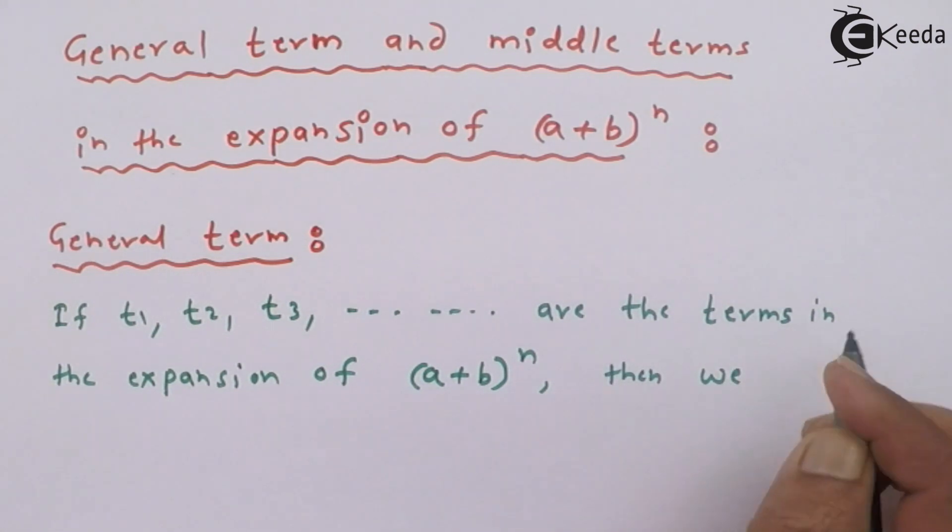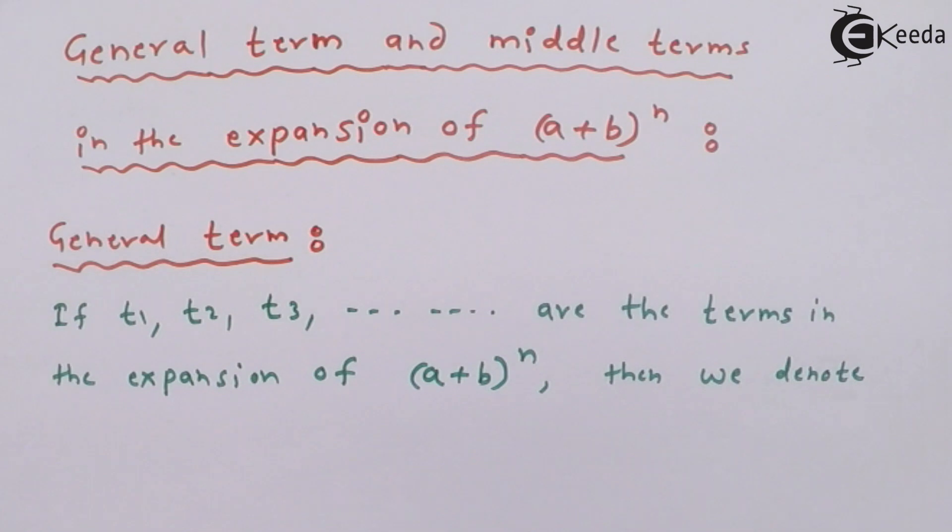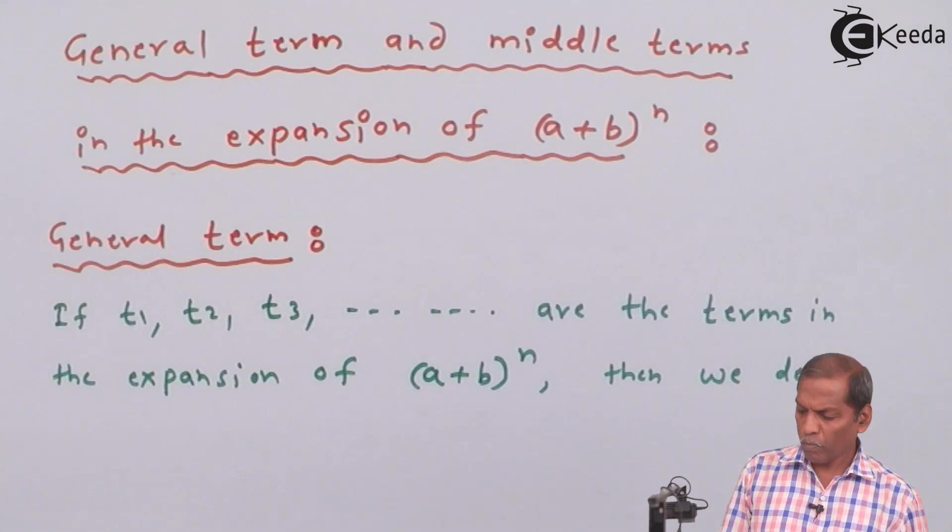Then, we denote the above terms that is T1, T2, T3 as follows.